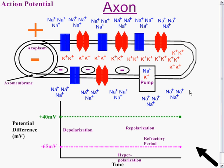Welcome to part two of the nerve impulse, which is the action potential. The action potential is what happens when the nerve is actually stimulated and there is some sort of response. We've mentioned the resting potential previously — in this case it would be at negative 65 millivolts, and a voltmeter would record this trace.